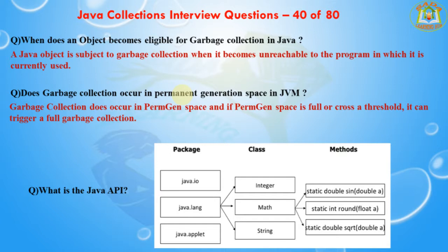The next question is: does garbage collection occur in permanent generation space in JVM? Garbage collection does occur in PermGen space. If PermGen space is full or crosses the threshold, it can trigger a full garbage collection. If you look carefully at the output of the garbage collector, you will find that PermGen space is also garbage collected. This is the reason why correct sizing of the PermGen space is important to avoid frequent full garbage collections. Also check out the article on Java 8, where PermGen space is replaced by MetaSpace.